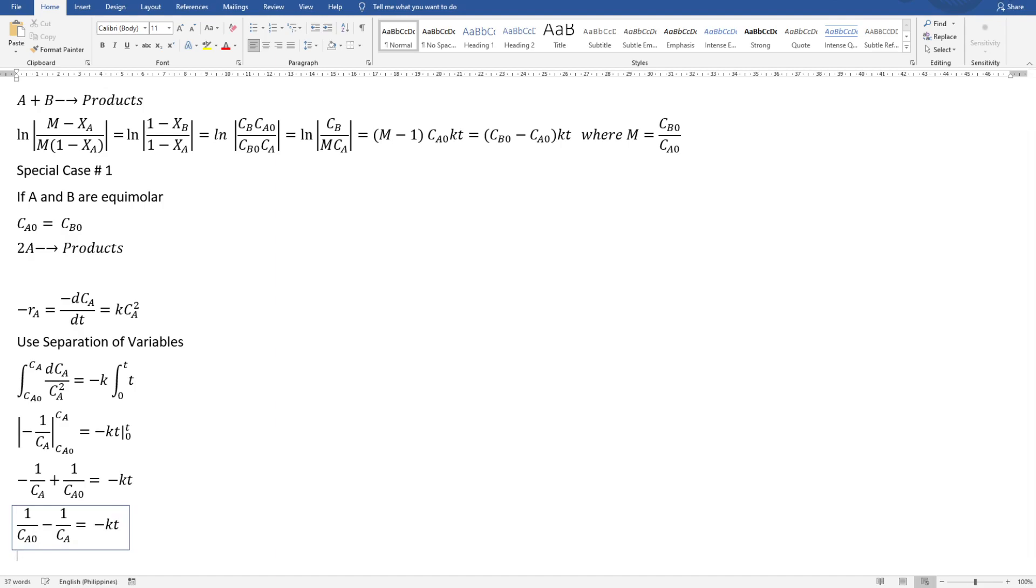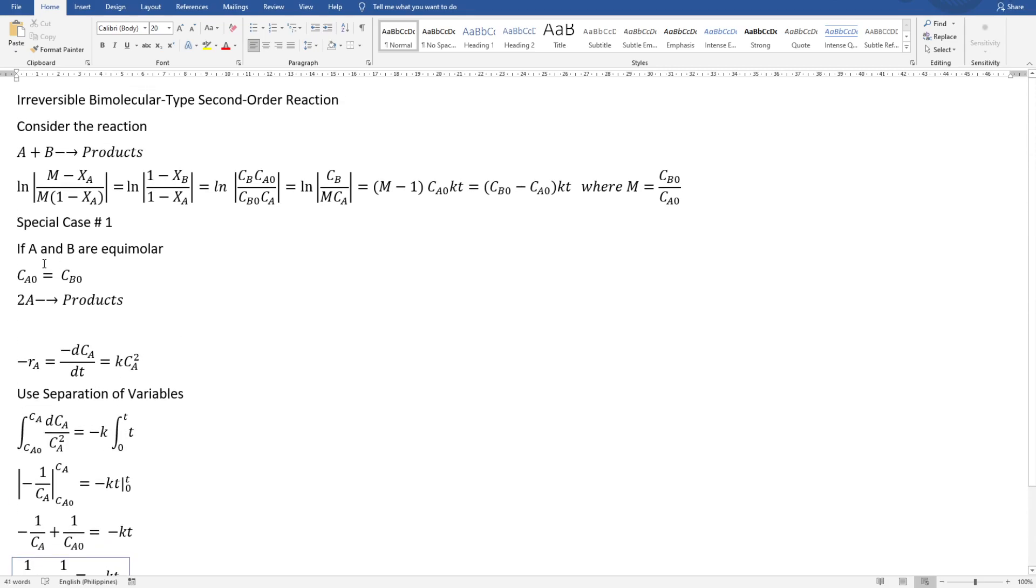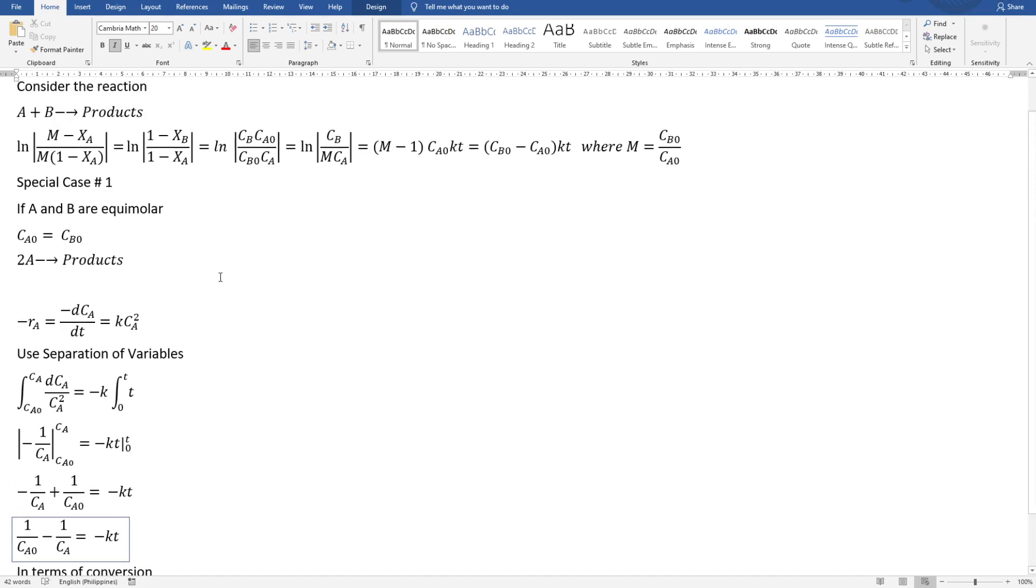In terms of conversion, we'll just be using the relationship of CA and CAO and XA. We have CA, right? CA equals CAO minus CAO times XA.